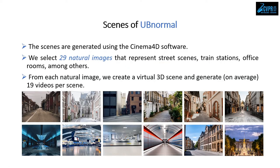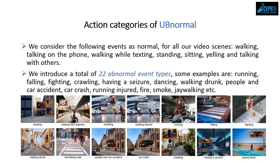AbnormalCR is generated using the Cinema 4D software. We select 29 natural images that represent street scenes, train stations, or face rooms, among others. For each natural image, we create a virtual 3D scene and generate about 90 videos per scene, producing both normal and abnormal videos. For the entire dataset, we consider the following events as normal: walking, talking on the phone, walking while texting, standing, sitting, yelling, and talking with others.